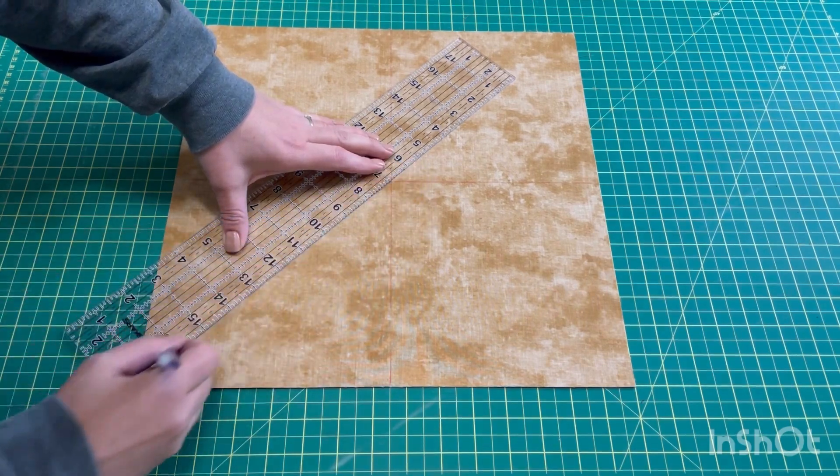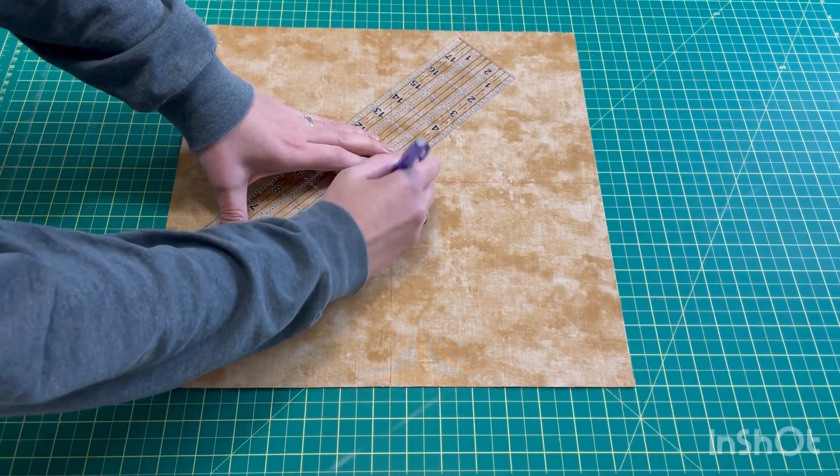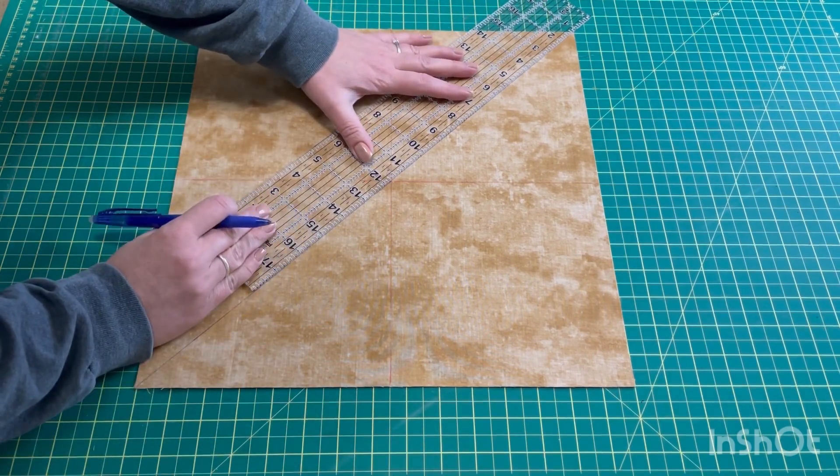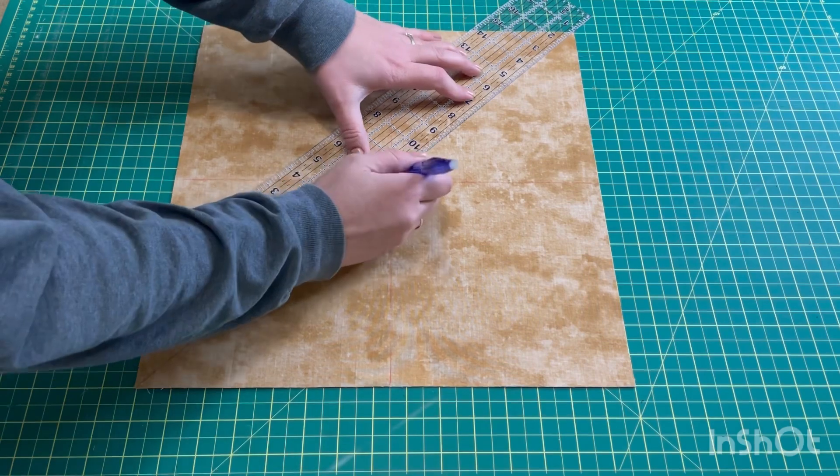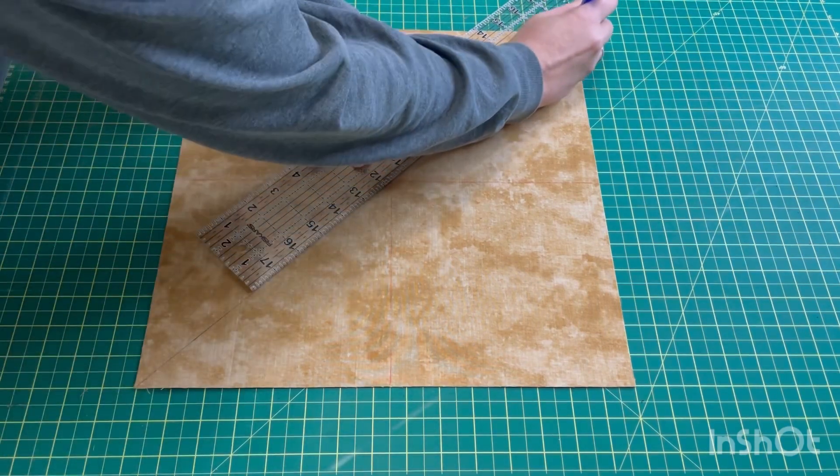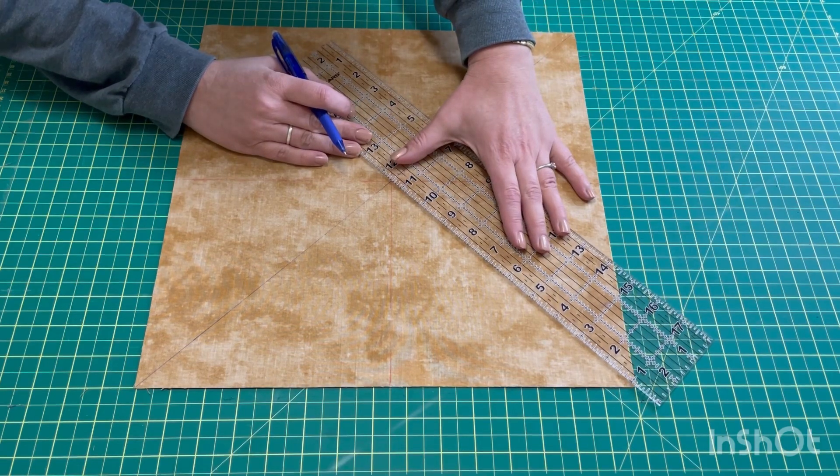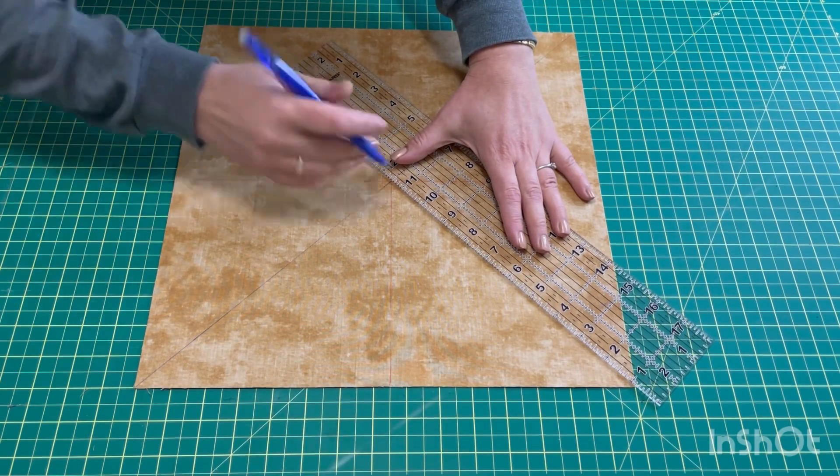I'm using the blue and you don't need to go over as often as I am. I am just doing this because I'm trying to get it to show up on camera. But we need a diagonal line from one corner to the other corner. Then you want to go diagonal line from the other corner to the other corner so you have a big X now.